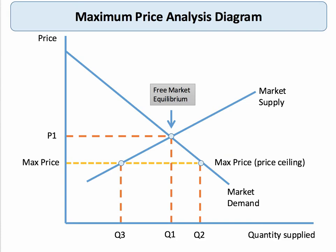Here's a standard maximum price diagram. To have any effect, the price ceiling must be set below the normal free market equilibrium, which this one has. In theory, consumers might benefit from the market price being lower — quantity would be lower than P1, and you'd expect quantity supplied to expand to Q2. They would want to buy Q2.